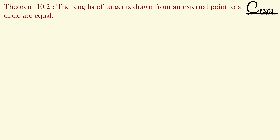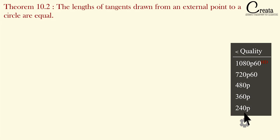So without taking any further time, let's start with the lecture. Theorem 10.2 states: the lengths of tangents drawn from an external point to a circle are equal. Before taking down the proof, let's understand the concept, then only we will take down the proof.